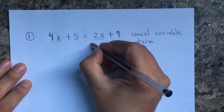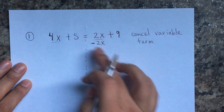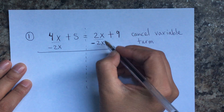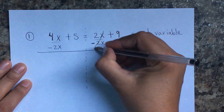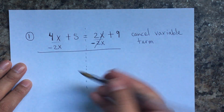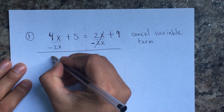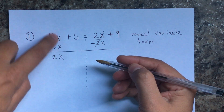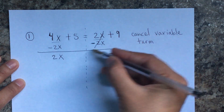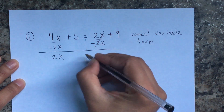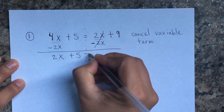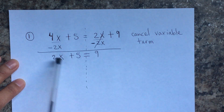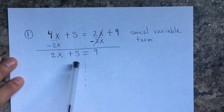We're going to cancel by subtracting the whole 2x — not only the 2, but the whole 2x. This cancels because we have variables on both sides: 4x minus 2x equals 2x. We're combining like terms. Once it's cancelled, we bring down the 5 equals, and then we bring down the 9.